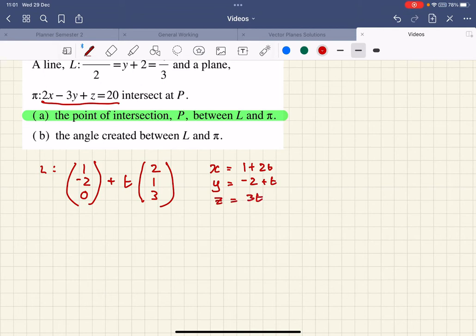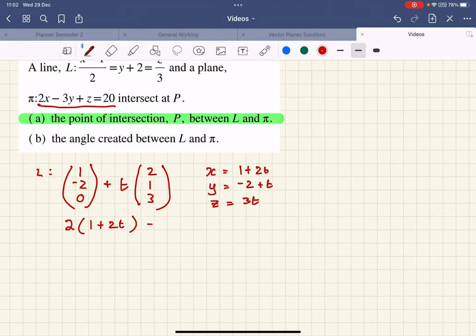Going to the plane, the x value is 1 plus 2t, minus 3 lots of minus 2 plus t, and then plus z, so just plus one lot of 3t, and all of that equals 20.